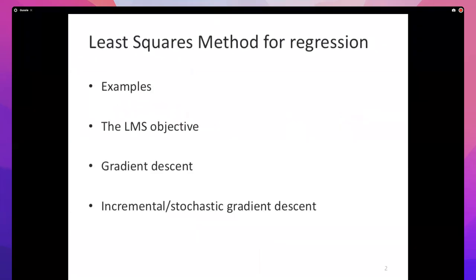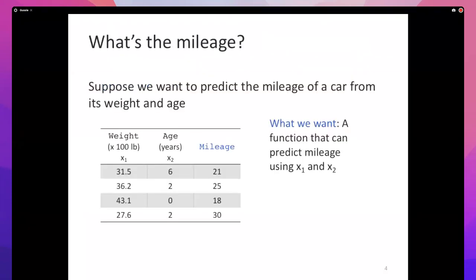The plan: I'll go over a toy example of regression, then talk about the goal of learning for least mean squares - the LMS objective. Then I'll discuss optimizing that objective using gradient descent, why gradient descent may not be ideal, and then introduce stochastic gradient descent.